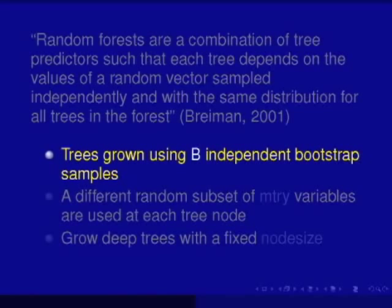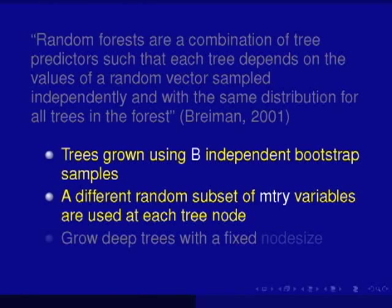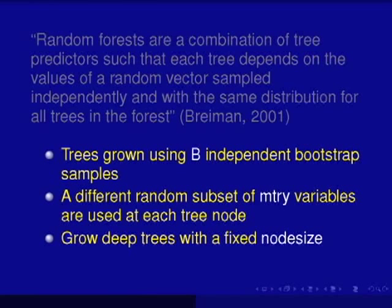This could be done in many ways, but the prescription Breiman laid out — sometimes called random forest random input — is very simple and involves three steps. Just like bagging, you draw B independent bootstrap samples. Here's where you infuse more randomization into the tree growing process: for each node, when splitting with the greedy splitting rule, instead of using all variables, select mtry of them. Mtry is some number less than or equal to p, where p is the number of variables. If mtry equals p, you're selecting all variables and essentially doing bagging. In practice, mtry is much smaller than p.